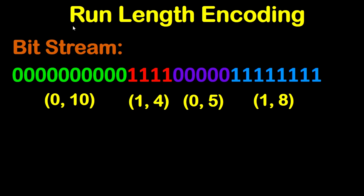In this tutorial, we are going to show a solid example on run length encoding. So let's apply run length encoding on this bitstream. What we are going to do is separate the numbers into groups of zeros and ones.